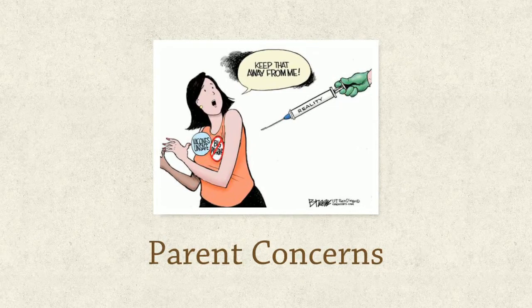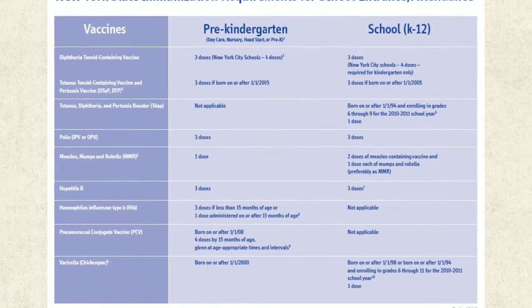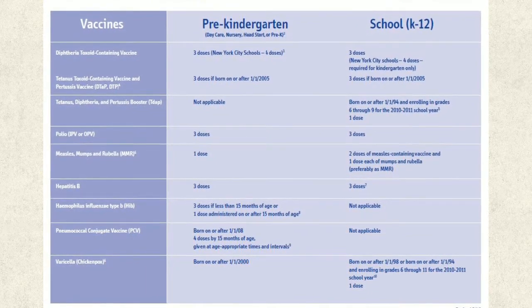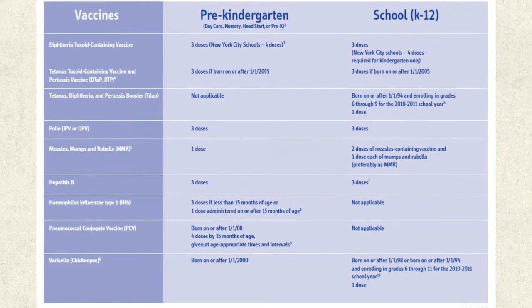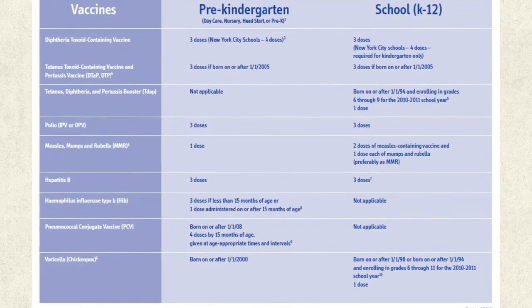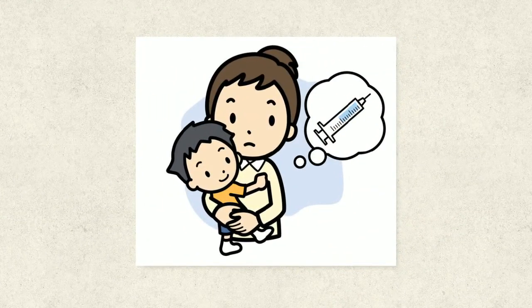Some concerns that parents have are that their immune system can't handle too many at once, and 'I've never seen it, so why worry?' In the United States, children entering kindergarten must have the polio, MMR — which is measles, mumps, rubella — varicella, pertussis — which is whooping cough — tetanus, and influenza vaccines. Here's New York State's immunization requirements for school. The measles, mumps, rubella vaccine is the least administered in the United States, but has been rising since 2013.